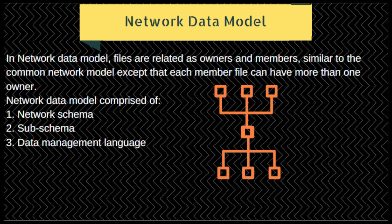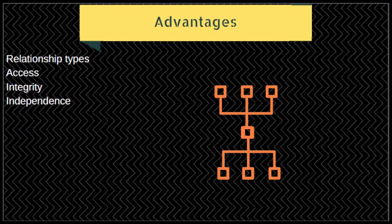The network data model identified three database components: first, the network schema — the database organization or structure; second, sub-schemas — views of the database per user; and third, the database management language, which can be low-level or procedural. Advantages include ability to handle more relationship types, ease of data access, data integrity, and data independence.